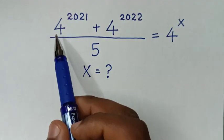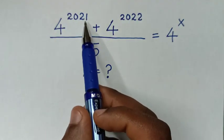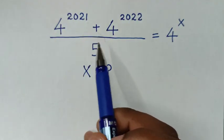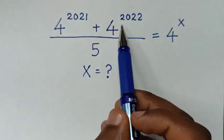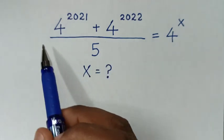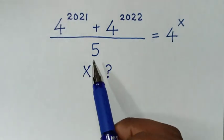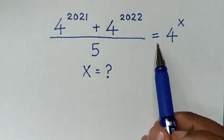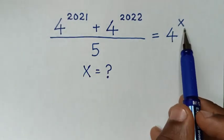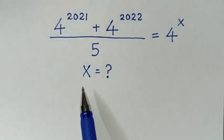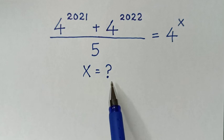Hello! How to solve: 4 power of 20,21 plus 4 power of 20,22 over 5 is equal to 4 power of x — find the value of x from this equation.